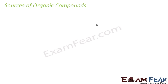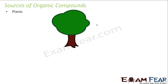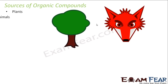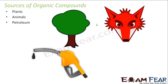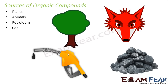Now let's see the sources of organic compounds. The first source is plants — from plants we get organic compounds. The next is animals — from animals also we get organic compounds. From petroleum, we also get organic compounds, and from coal as well. So the four sources of organic compounds are: plants, animals, petroleum, and coal.